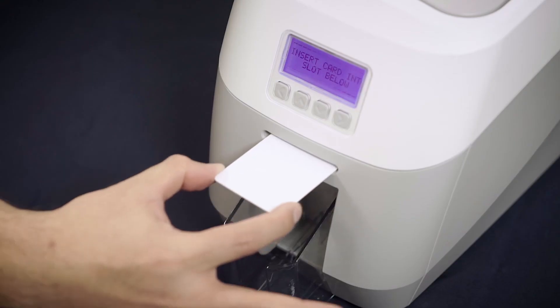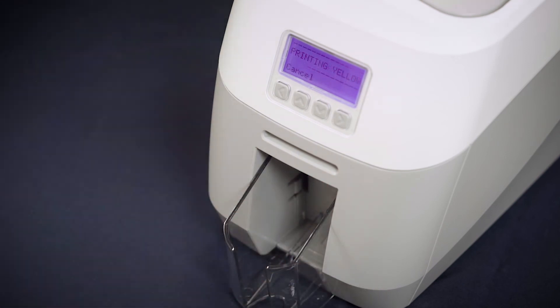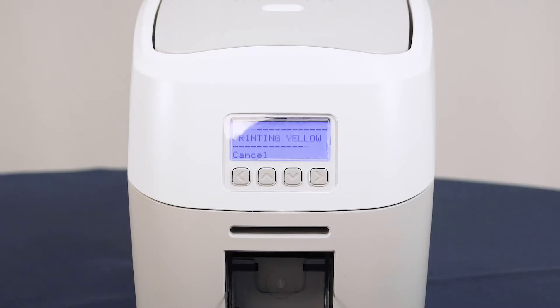When instructed, insert a single card into the slot at the front of the printer under the display. Your MagiCard 600 will now print the test card design. The display will tell you which colour is printing in turn.